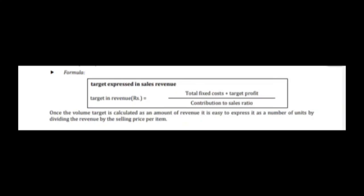Now let us look at target profit. The company sets a profit goal and wants to know how to achieve it. The formula is: (total fixed cost + targeted profit) ÷ contribution sales ratio. Once this sales amount is calculated, divide by selling price per unit to get the number of units to be sold to achieve the targeted profit.